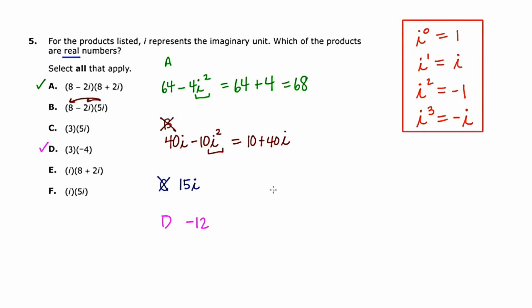And now we'll go to e. And this is going to be another distribution, except this time the single term is on the left instead of the right. So I'm going to distribute these two together, and then these two together. And this is going to be 8i plus 2i squared, really driving home this idea that i squared is negative 1. We get 2 times negative 1, which is negative 2, plus 8i. There's going to be no way to get this i to go away. So this is a complex number. It's not real. This is not going to work. So e does not get selected.